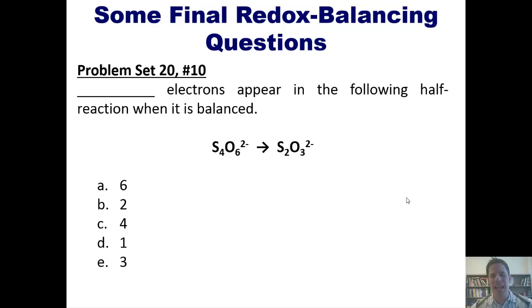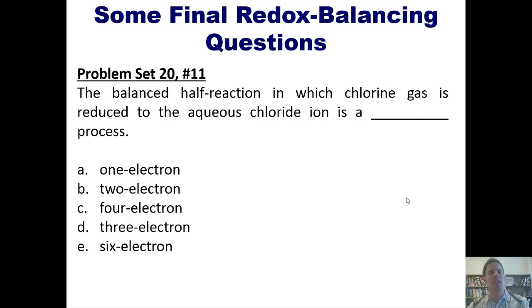Blank electrons appear in the following half-reaction when it is balanced. Now, having shown you how to do this kind of thing in the previous example, I'm not going to solve this for you here, but I'll invite you to do it on your own. First, for students who take this class from me, well, you'll have to actually come to class and ask me how to do it. I'll be happy to show you there. Here's another one. The balanced half-reaction in which chlorine gas is reduced to aqueous chloride ion is a blank process. Same kind of approach will be applied here. I'll let you guys do it on your own, and for students who take this from me, I'll show you in class.